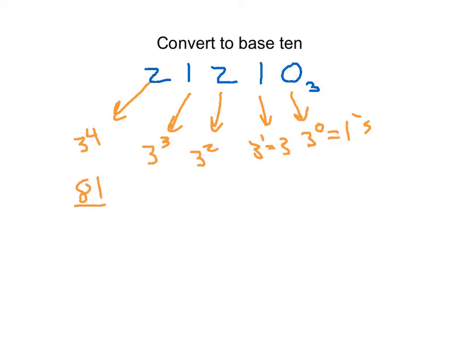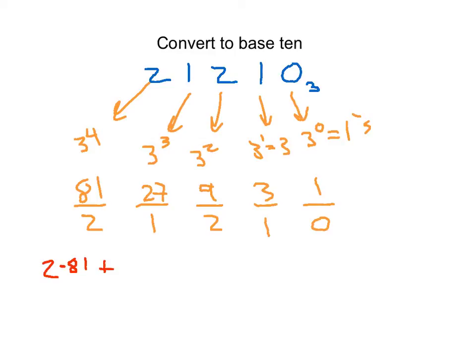So we have columns representing 81s, 27s, 9s, 3s, and 1s — going up by powers of three. The number 21210 in base 3 means: two groups of 81, plus one group of 27, plus two groups of 9, plus one group of 3, plus zero groups of 1.